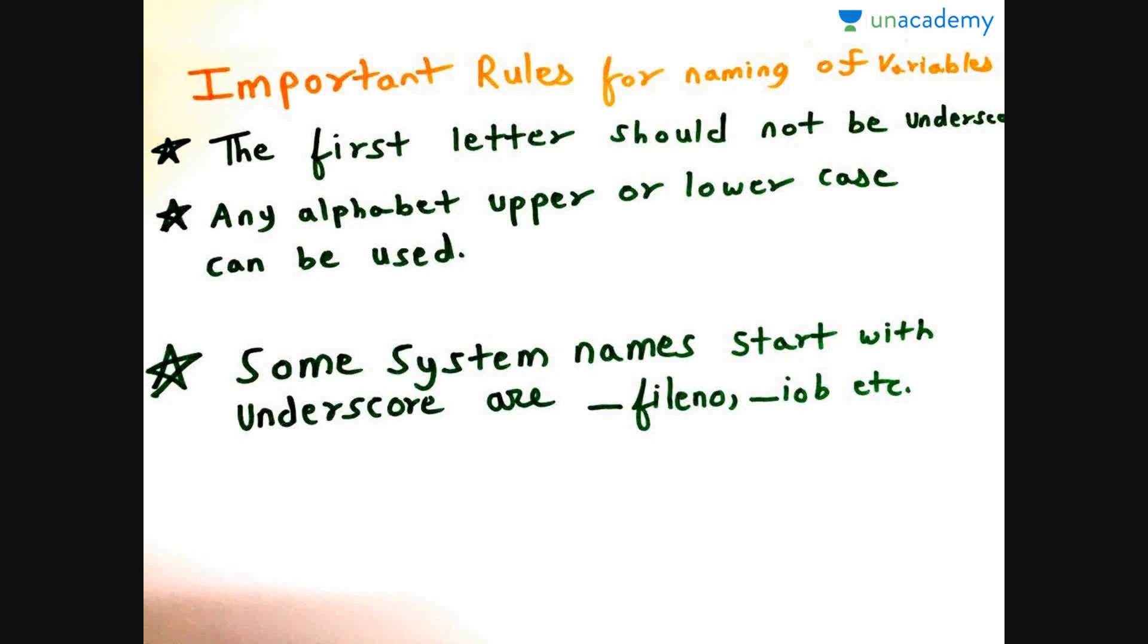Now there are a few rules for naming the variables. The first letter should not be an underscore because there are some other files which are named by underscore and hence it cannot be used. Also you cannot use the reserved words, those are the keywords, because they already are predefined. Hence the keywords cannot be used as variable name.